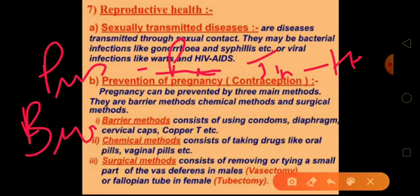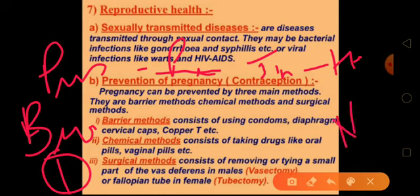HIV AIDS is spread by: first, unprotected sex; second, use of contaminated needles and syringes when injecting drugs or vaccines; third, use of contaminated razors for shaving; and fourth, transfusion of infected blood or blood products. These are the main ways by which this disease spreads.